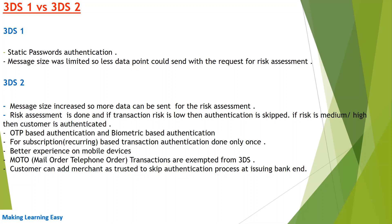If the transaction risk is high and the issuing bank finds it a very risky transaction, then the issuing bank declines the transaction. 3DS 2 offers both OTP-based and biometric-based authentication.